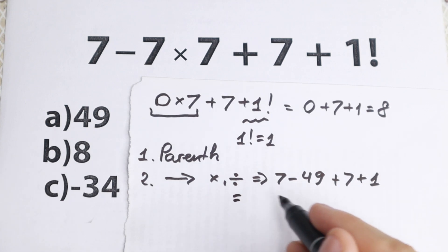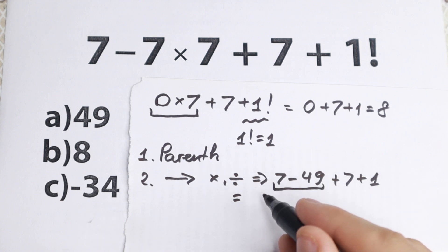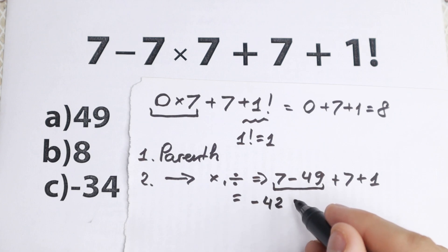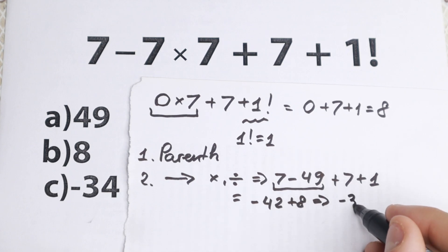And right now, as you can see, we have a completely different answer because 7 minus 49, we will have minus 42 and plus 8. So we have this question plus 8. As a result, real quick, answer minus 34.